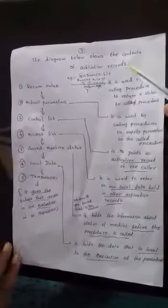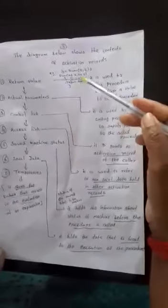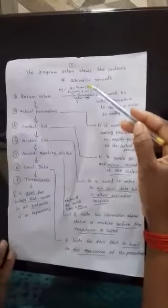The contents of activation records have seven fields: return values, actual parameters, control links, access links, saved machine status, local data, and temporaries. Return value — for example, a equals a function call; after that we use the function definition. The function call is used to call the function definition, which returns the result. That result is stored in a temporary variable, and then the value 'a' is displayed. That is called the return value.